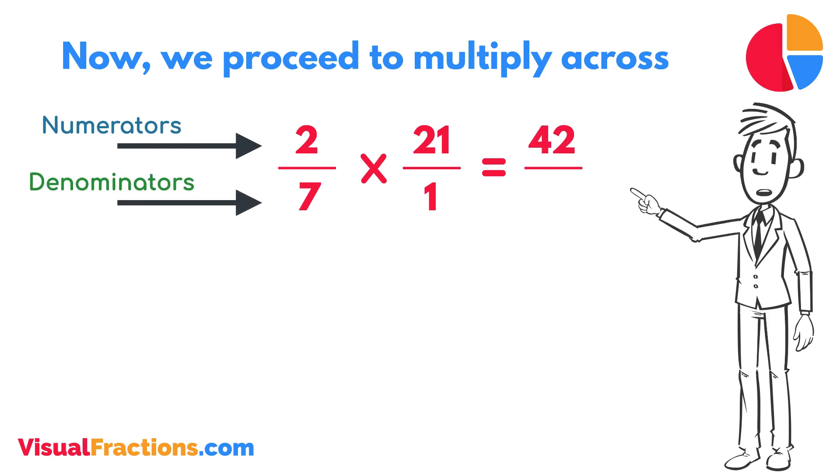Next, multiply the denominators: 1 times 7 equals 7. We now have a new fraction, 42/7.